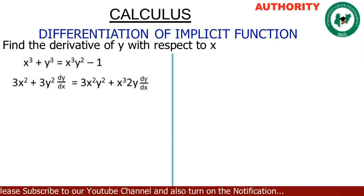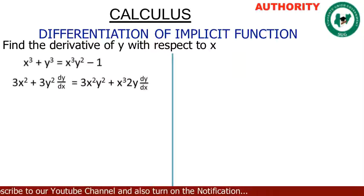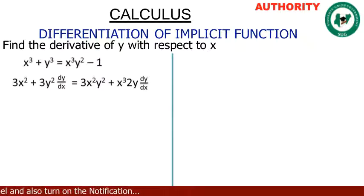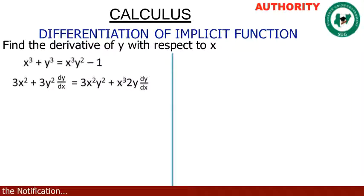Then plus the derivative of y² gives us 2y dy/dx, times s³. The derivative of minus 1 gives us zero. So we have: 3s² + 3y² dy/dx = 3s²y² + s³ · 2y dy/dx.